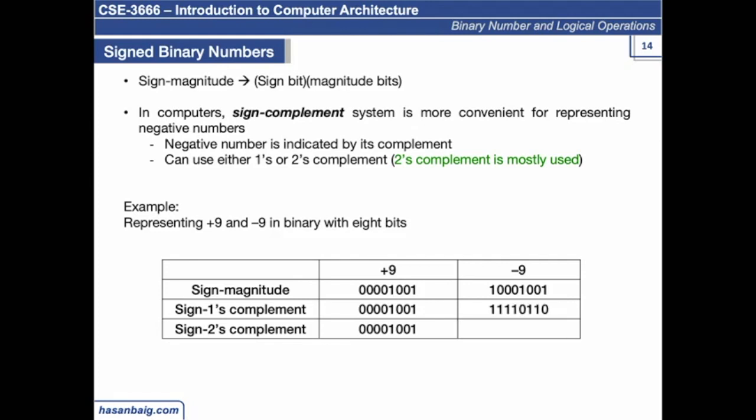Next is sign one's complement. What you do is simply invert all the bits to get to the negative 9 in one's complement method. In two's complement method, again we have been doing this. So keep the 1 same and invert all the remaining digits.